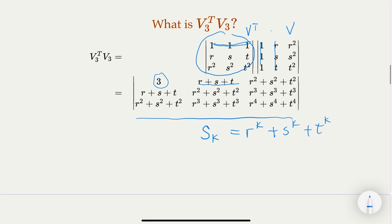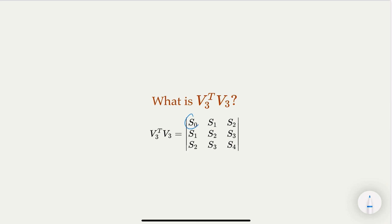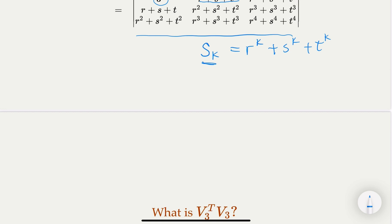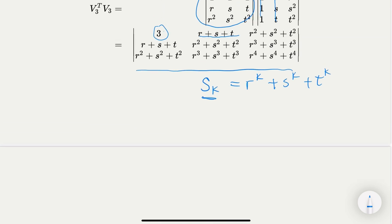So this matrix, if you write in terms of s, is going to be this. S_0, when raised to the 0th power, would be 3 - r to the 0th power, s to the 0th power, that would be 3. S_1 would be the first power, S_2 would be the second power, and this would be S_4 here, S_3.